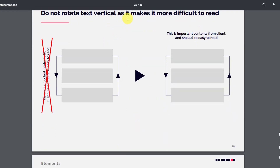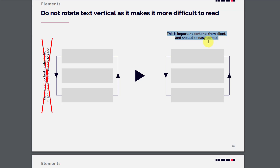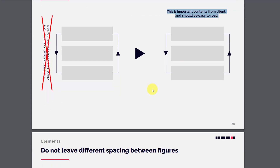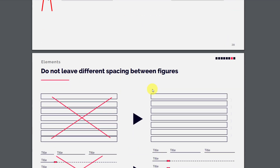Do not rotate text, as it makes it more difficult to read. Text should not be displayed vertically — it should always be in a horizontal manner, which is easy for clients to read.